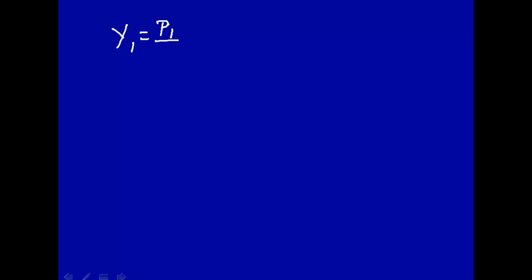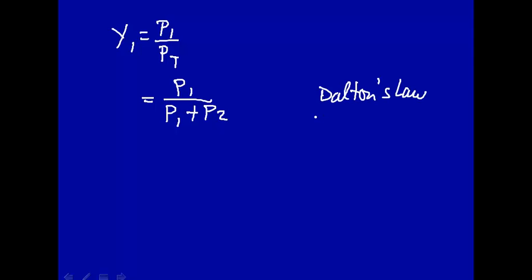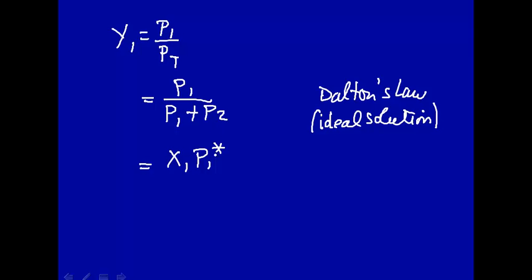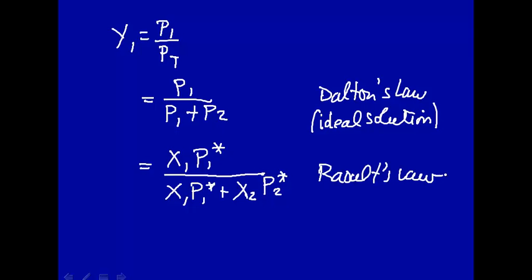We know the mole fraction in the vapor phase is the partial pressure divided by the total pressure of the solution, and the total pressure is just the sum of the partial pressures — that's Dalton's law, assuming ideal solution and ideal gas behavior. From Raoult's law, the partial pressure above the solution is the mole fraction in solution times the vapor pressure of pure 1, divided by x₁p₁* plus x₂p₂*, where x₂p₂* is the mole fraction of component 2 times the vapor pressure of pure 2. That gives us y₁.